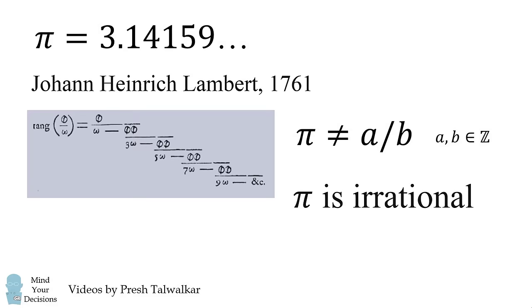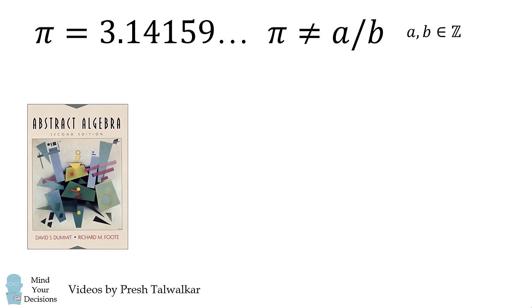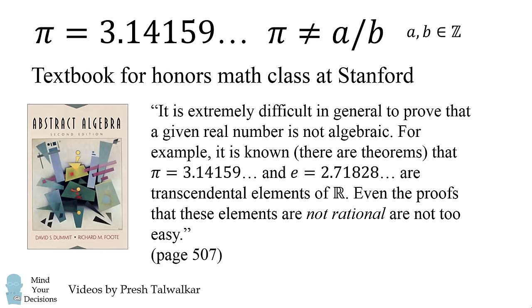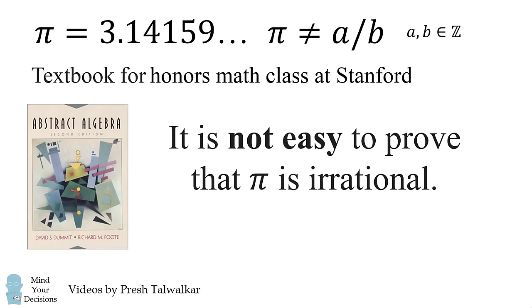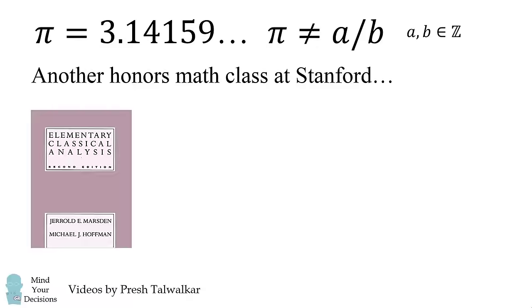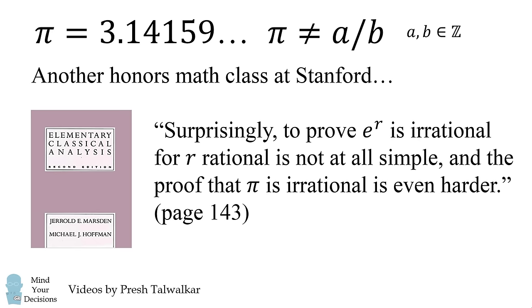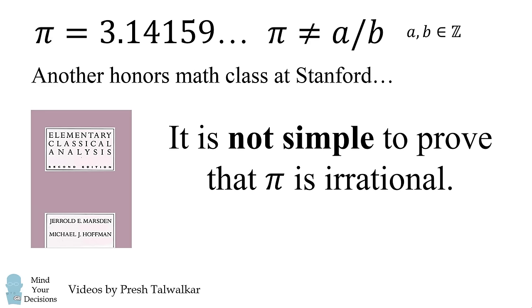Why did it take so long for this proof? Well, here's a quote from a textbook when I was taking an honors math class at Stanford. Let me summarize this quote. It essentially says that it is not easy to prove that pi is irrational. In fact, there's another sentiment in another textbook I took while I was taking a math class at Stanford. Again, the textbook states that it is not simple to prove that pi is irrational.